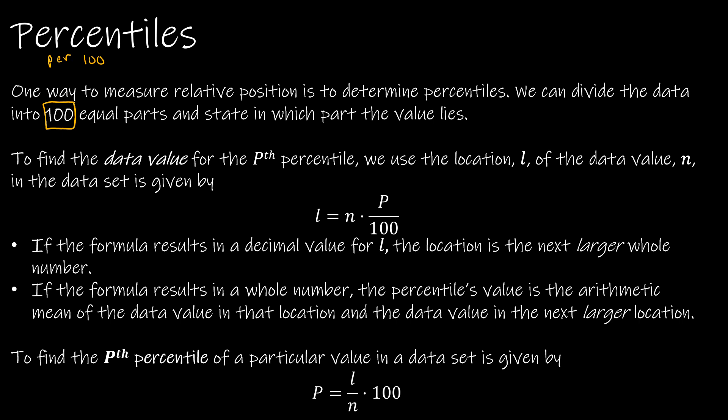If we're trying to find the data value, essentially what we need to know is the location. So the location is going to be found by taking the data value that we have and multiply that by the percent over 100, or the percent as a decimal. If you end up with a decimal value for L, the location is the next larger whole number. If it results in a whole number, then you're finding the arithmetic mean, which is just the average of the data value in that location and the next larger location.